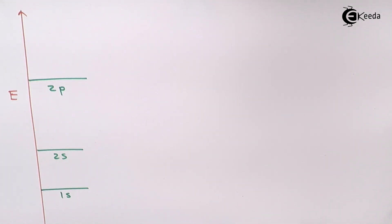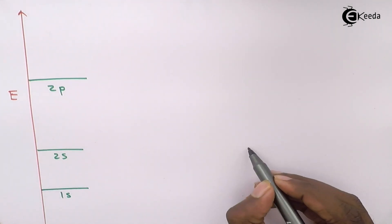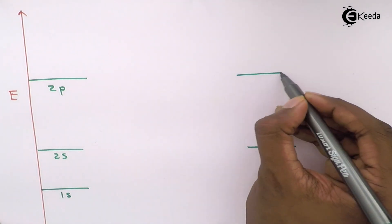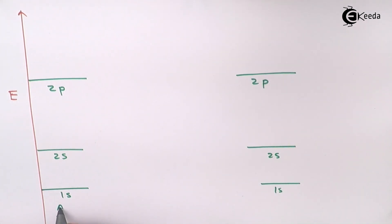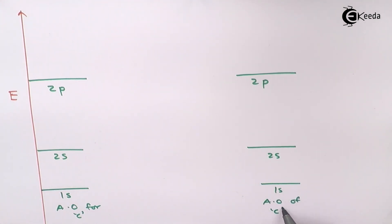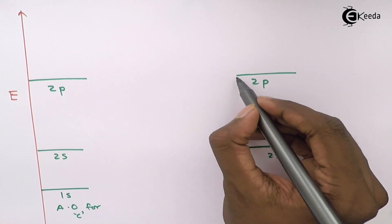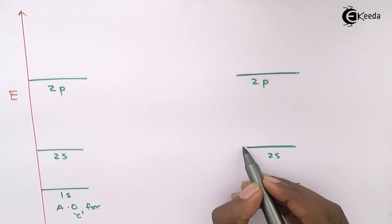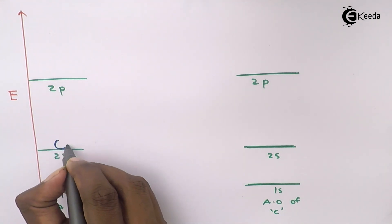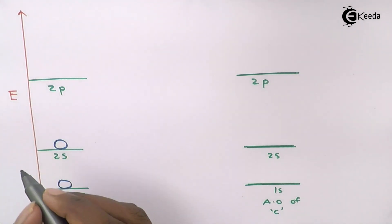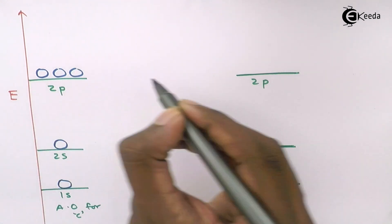Similarly, we draw the same energy levels for the second carbon atom: 1s, 2s, and 2p energy levels. This is the atomic orbital for one carbon atom and this is again the atomic orbital of the other carbon atom. The 1s consists of one orbital, 2s also consists of one orbital, and 2p consists of three orbitals.